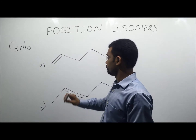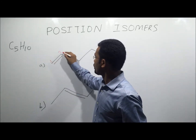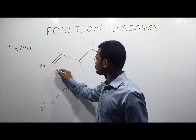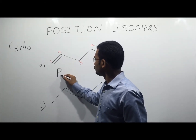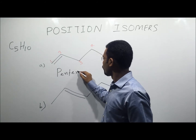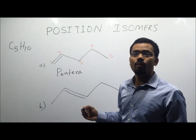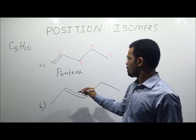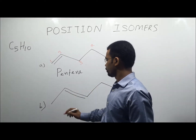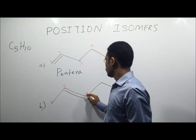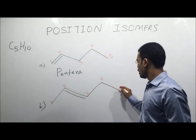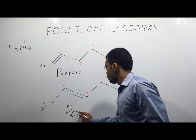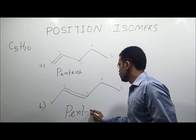The name of A will be: numbering 1, 2, 3, 4, 5 — the name will be pent-1-ene. First of all, do the numbering 1, 2, 3, 4, and this will be 5. So the name will be pent-1-ene.